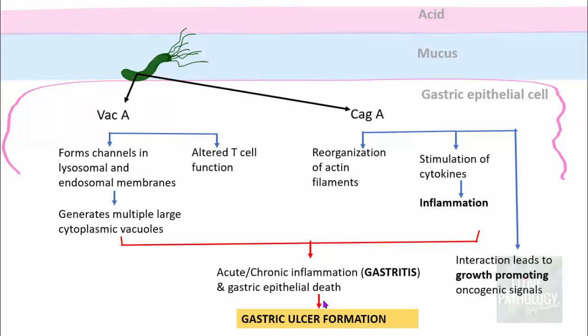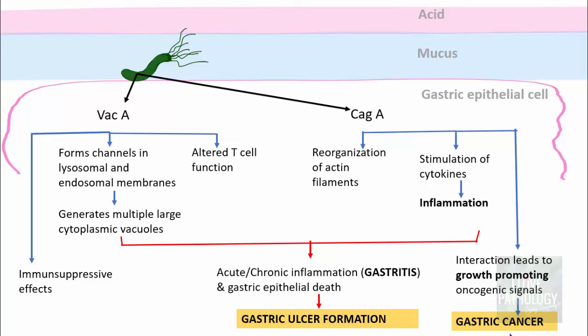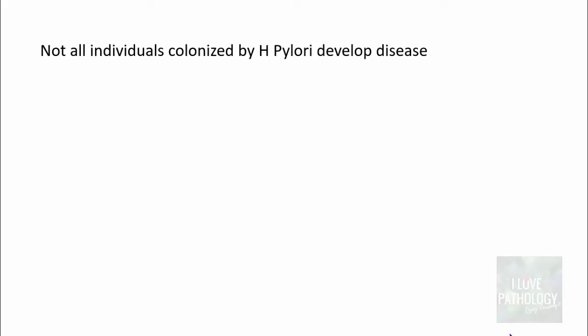CagA interaction also leads to growth-promoting oncogenic signals, which is how there is development of gastric cancer. The vacuoles have immunosuppressive effects, which is why there is not much natural immunity to H. pylori infections. Most of the world population is affected by H. pylori, particularly in developing countries with low socioeconomic status and improper hygiene. Majority of individuals are infected by H. pylori but not all colonized individuals develop disease — only 15% develop disease, meaning 85% who have colonized bacteria do not develop disease.